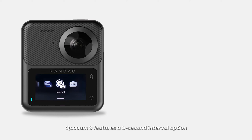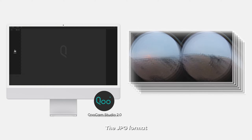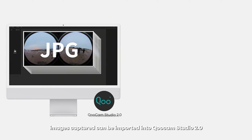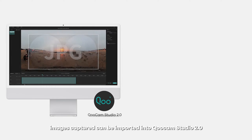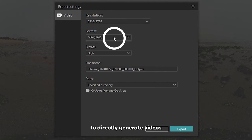Qoocam 3 features a 0 second interval option in its interval shooting mode. The JPG format images captured can be imported into Qoocam Studio to directly generate videos.